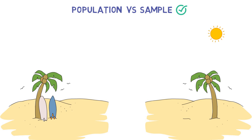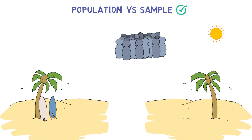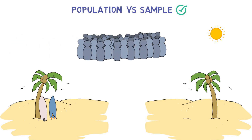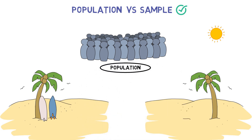Now let me define population and sample first, then we will move ahead with some real time examples for these two. So as for population, I would say it is a discrete group of people, animal or things that can be identified by at least one common characteristic for the purpose of data collection and data analysis. Therefore, it contains data of all the members of a specified group.